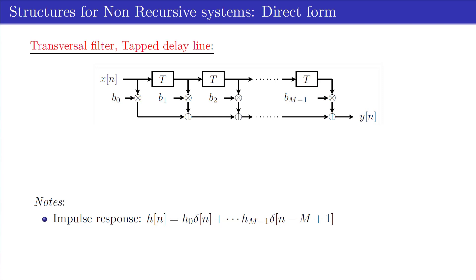We denote the impulse response coefficients as H0 until Hm-1, as depicted in the figure. In previous videos, we have seen that the shown system is a causal FIR filter,